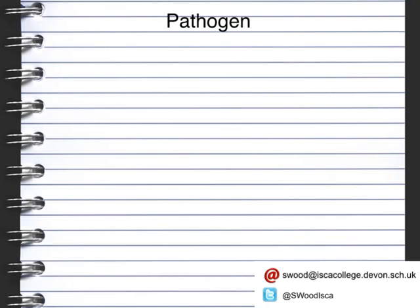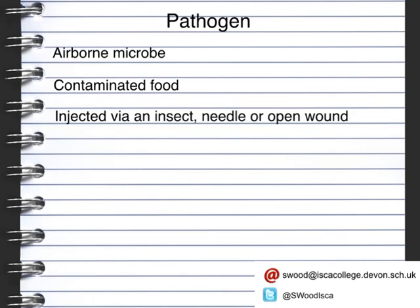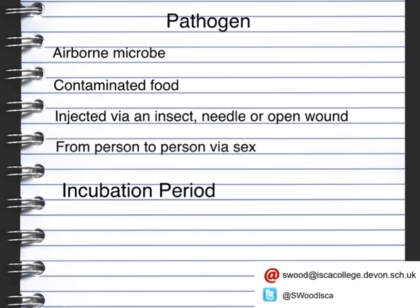Pathogens can be spread through a number of different ways. The first is as an airborne microbe. The second is via contaminated food entering the mouth. The third is injected via an insect, needle, or from an open wound. And then the fourth is from one person to another via sex. Now the pathogens need a period of time before they will actually take effect, and this is known as the incubation period.